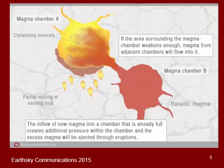Another way composition changes is if two magma chambers intersect. One chamber may have been sitting for a while with lots of partial melting and fractional crystallization, making it very different in composition, while another that migrated faster has had less time to incorporate felsic minerals and retains a more basaltic composition. When these two intersect, it can change the overall composition of that magma chamber.